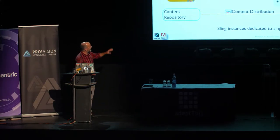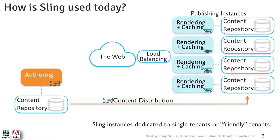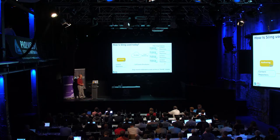This is a typical Sling system, and this is also how AEM works because it's based on Sling. The idea is that you separate the authoring from the publishing. In authoring, you're creating content — you have a relatively small number of users, which can still be in the thousands if you have a big AEM system, but it's small compared to the web. On the right side, you have the web: a hostile environment, no idea how many users, big spikes — very unpredictable, hostile in some ways, and bursty.